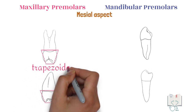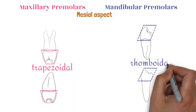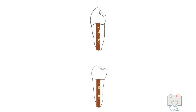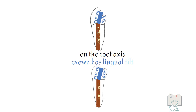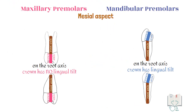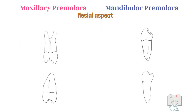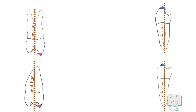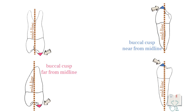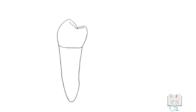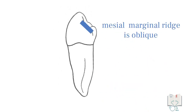Mesial aspect: the outline form in maxillary premolars is trapezoidal in shape, whereas in mandibular premolars it is rhomboidal. This is because the crown of both mandibular premolars has a lingual tilt on the central axis of the tooth, which is not the case in maxillary premolars. In maxillary premolars, both cusps are within the confines of the root, whereas in mandibular premolars the lingual cusp is outside the lingual outline of the root. Moreover, with respect to the midline axis, mandibular premolars have buccal cusps nearer to the midline axis than maxillary premolars. The mesial marginal ridge in both maxillary premolars is horizontal, whereas in the mandible it is horizontal only in the second premolar; in the first premolar it is oblique.